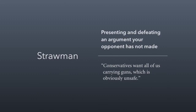The first logical fallacy is the strawman argument. This is where you present and defeat an argument your opponent has not actually made. For example: 'Conservatives want all of us carrying guns, which is obviously unsafe.' The reality is conservatives don't want all of us carrying guns — at least not all conservatives. You're presenting an argument that's not ever actually put forth. It also creates an accusatory nature, making it seem like they're stupid for believing something they don't actually believe.